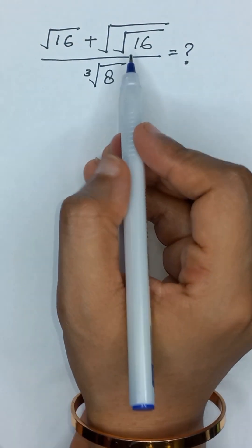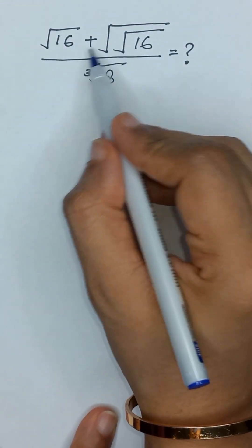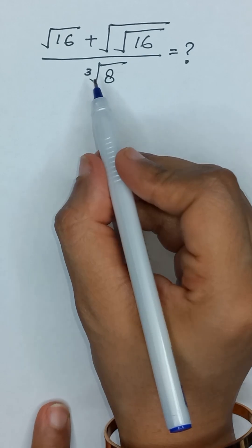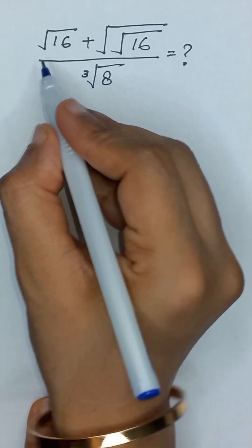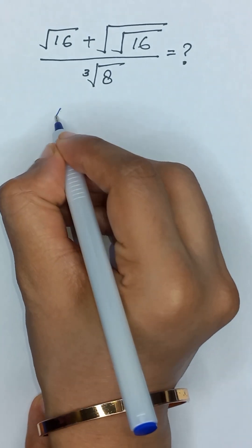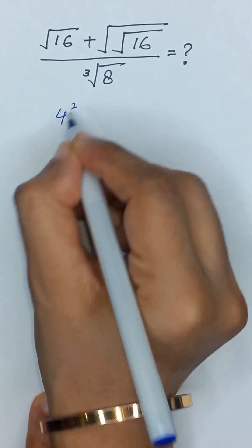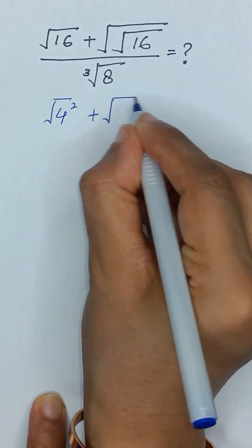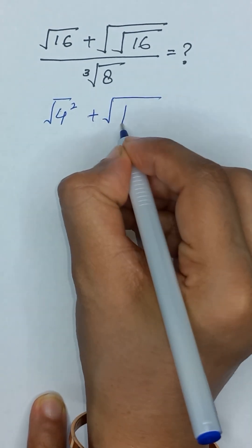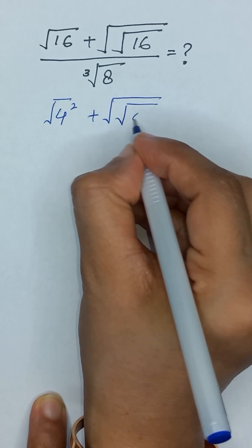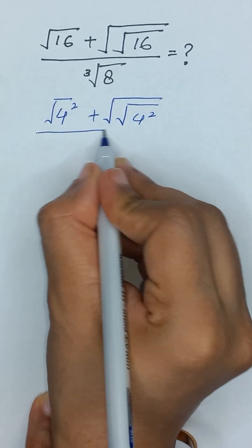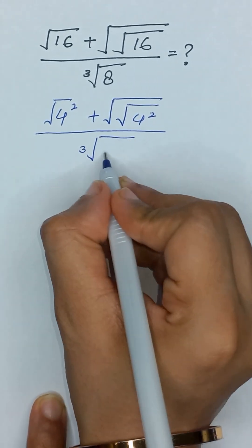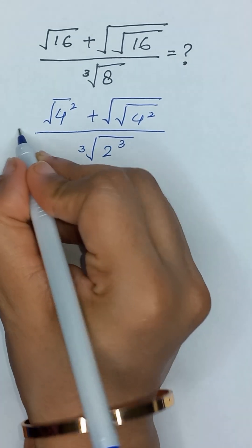Square root of 16 plus square root of square root of 16 divided by cube root of 8. So 16 is the same as 4 squared, and its square root, plus square root of square root of 16 — which is the same as 4 squared — divided by cube root of 8, and 8 is the same as 2 to the power 3.